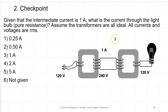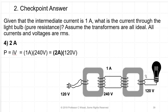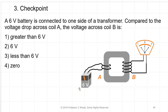Another checkpoint: with 1 amp entering the first transformer at 240 V, the power is 240 W. Since both transformers are ideal, the same 240 W must appear at the output. With 120 V at the light bulb, the current is 240 W / 120 V = 2 amps. Checkpoint: a 6-volt battery connected to one coil of a transformer. A battery is DC and doesn't vary, so the coil doesn't react and the voltage across coil B is zero — transformers only work with time-varying signals.